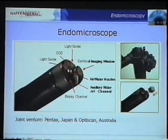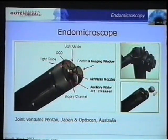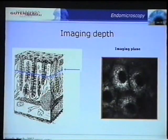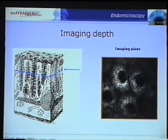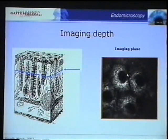This is what the endomicroscope looks like. Basically, into the distal tip of an otherwise conventional endoscope, we see erythrocytes traveling through the capillaries, and you can see how a single capillary circumvents each single crib in a honeycomb pattern.